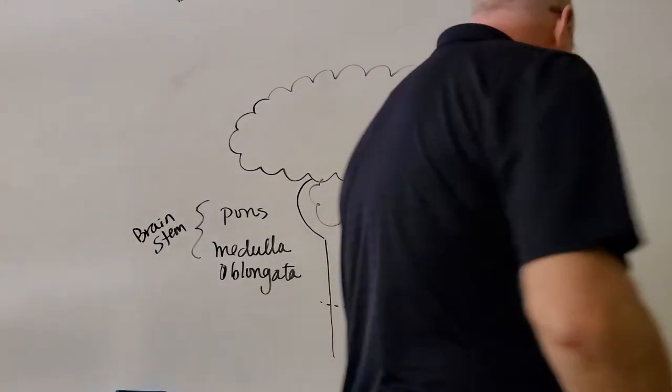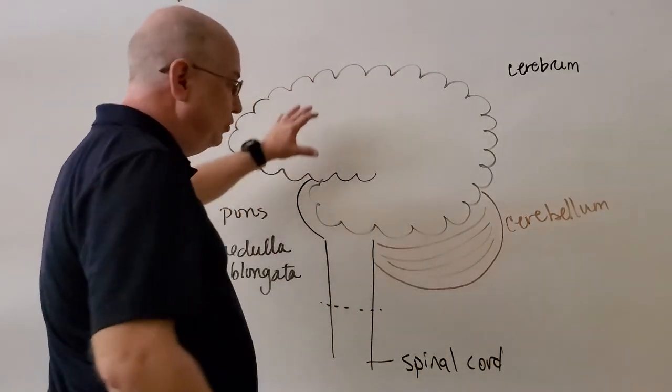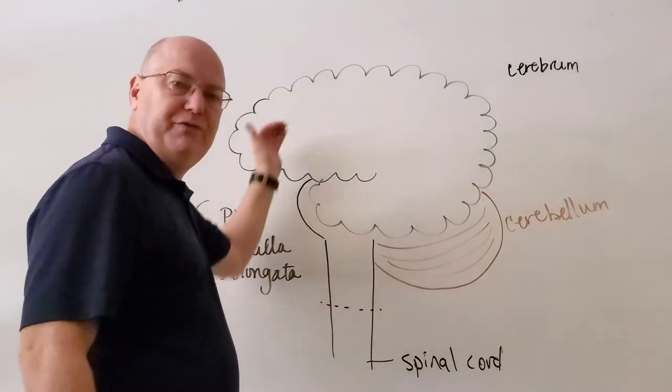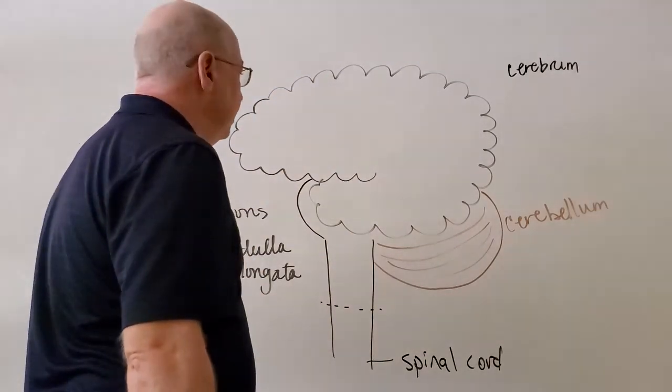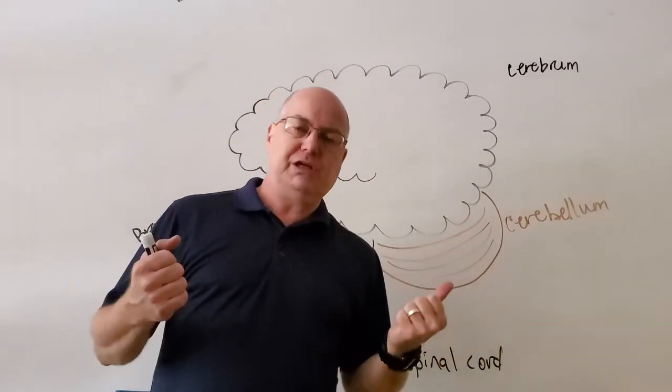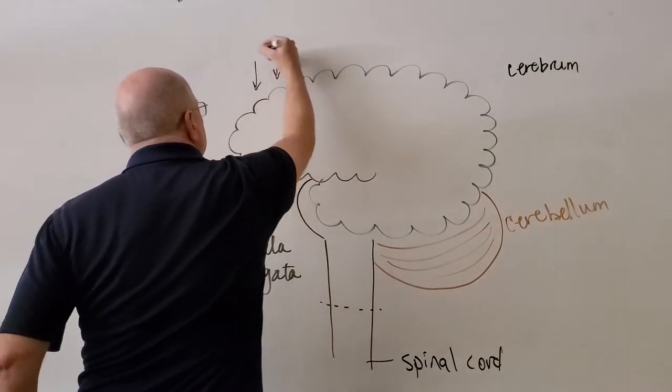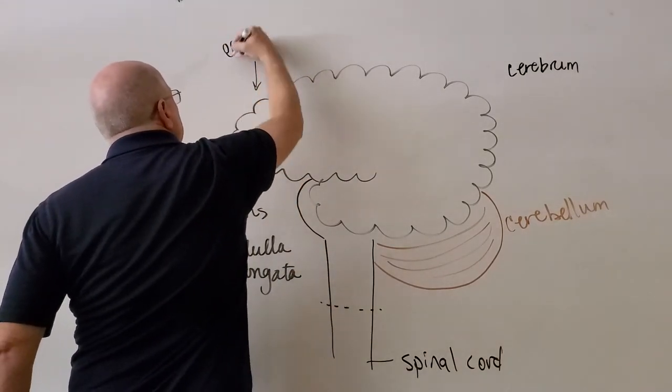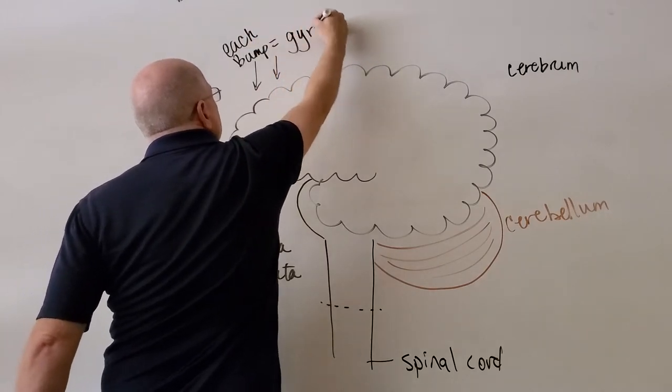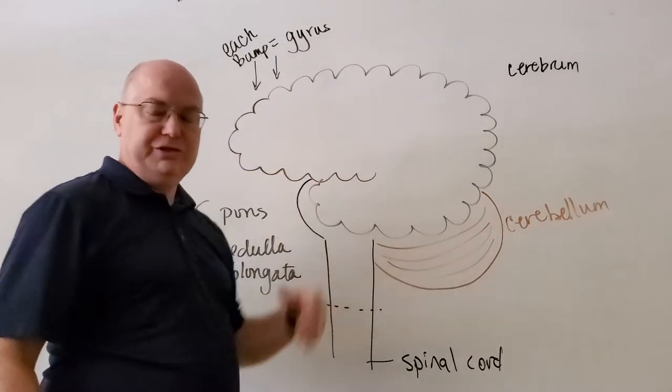Now, when we do look at the surface of the brain, we notice that the surface of the brain, the cerebrum itself has all these bumps that stick out. I refer to them as bumps. Some people say they're folds that stick out of the brain. But if I were to ask someone to gyrate their hips, gyrate means you stick out. So every bump that sticks off the surface of the brain is called a gyrus.